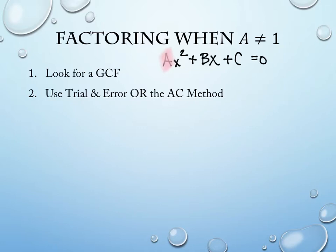After you've seen whether or not you can factor anything out, what you're going to do with what remains — which may be the whole thing — is use either trial and error, which is okay, but if you get a lot of errors it can get frustrating. Or you can use the AC method, which tends to take a little longer but always ends at the conclusion in a specified amount of time. There are pluses and minuses to both.